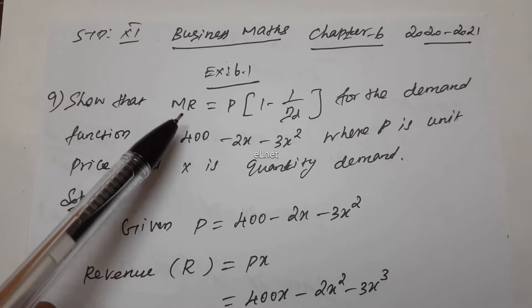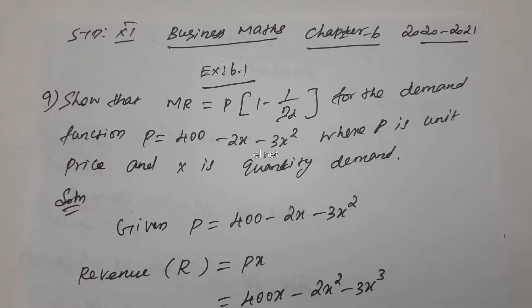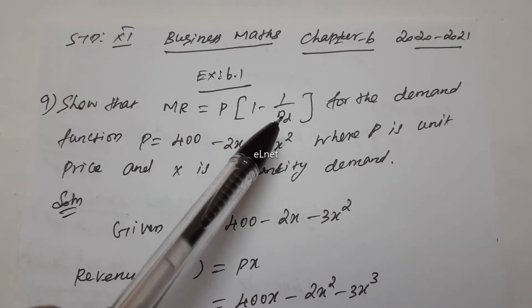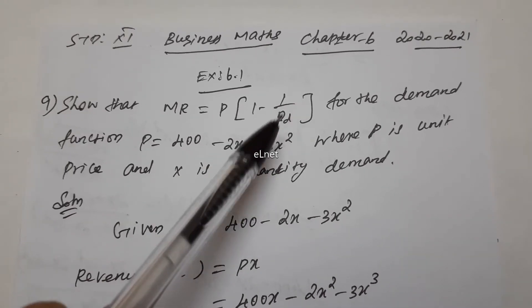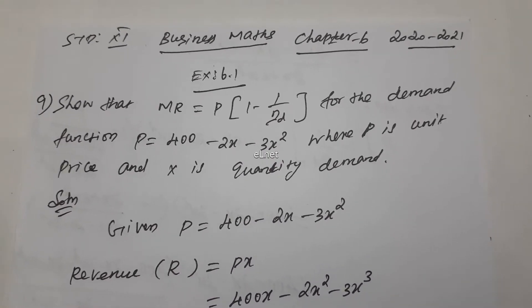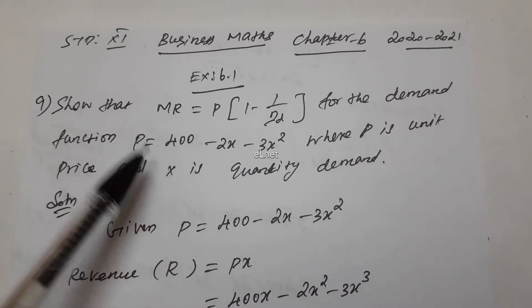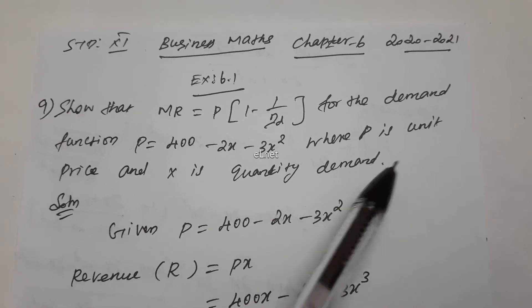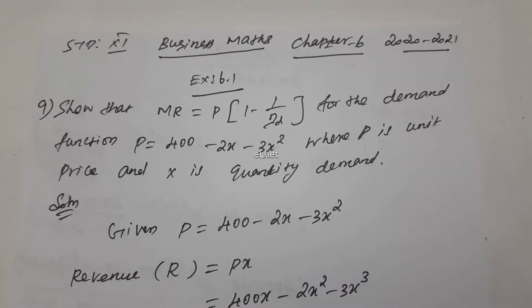Show that MR, that means Marginal Revenue, MR is equal to P times 1 minus 1 by eta D. Eta D means elasticity of demand. For the demand function P is equal to 400 minus 2x minus 3x squared, where P is unit price and x is quantity demand.